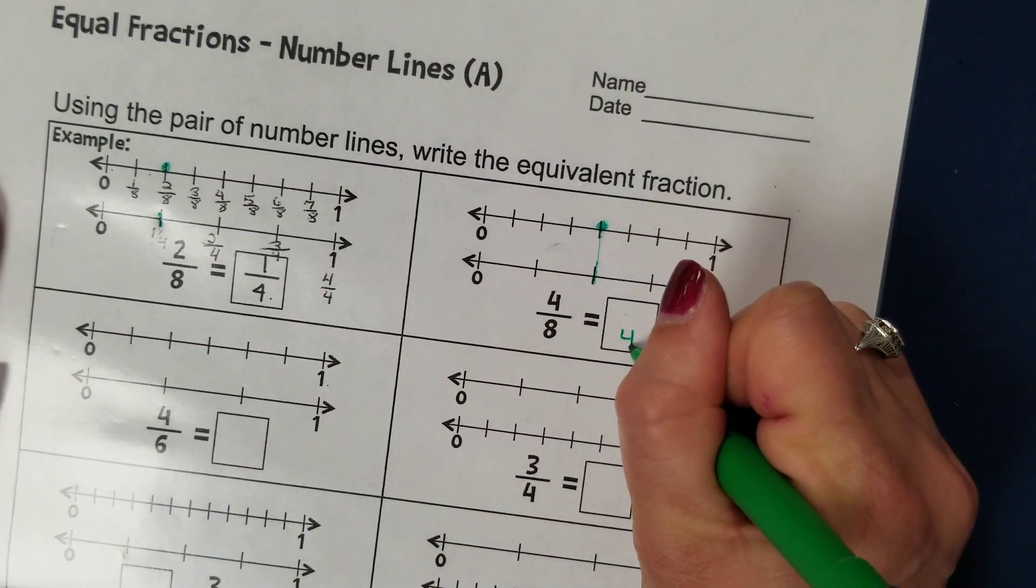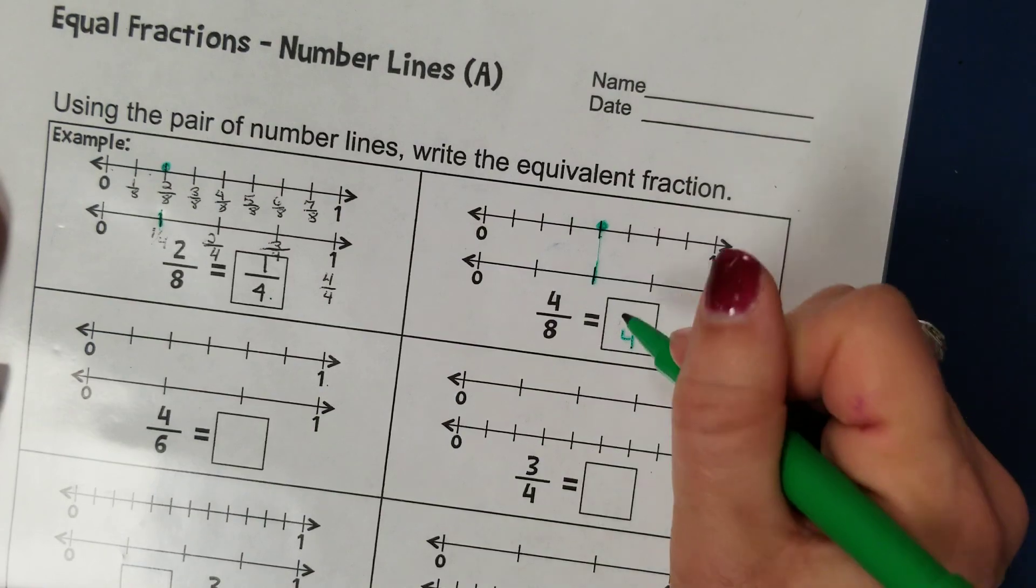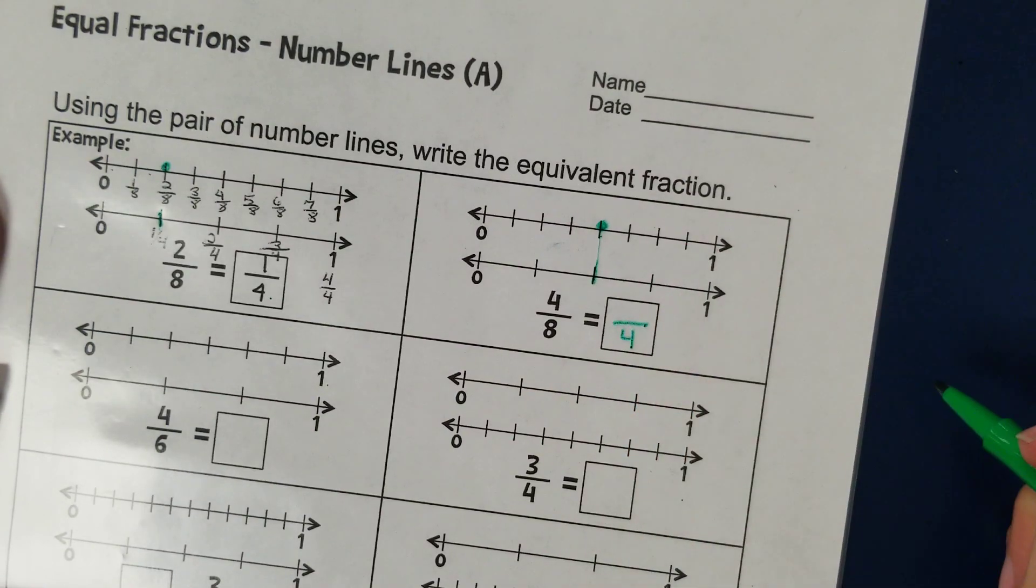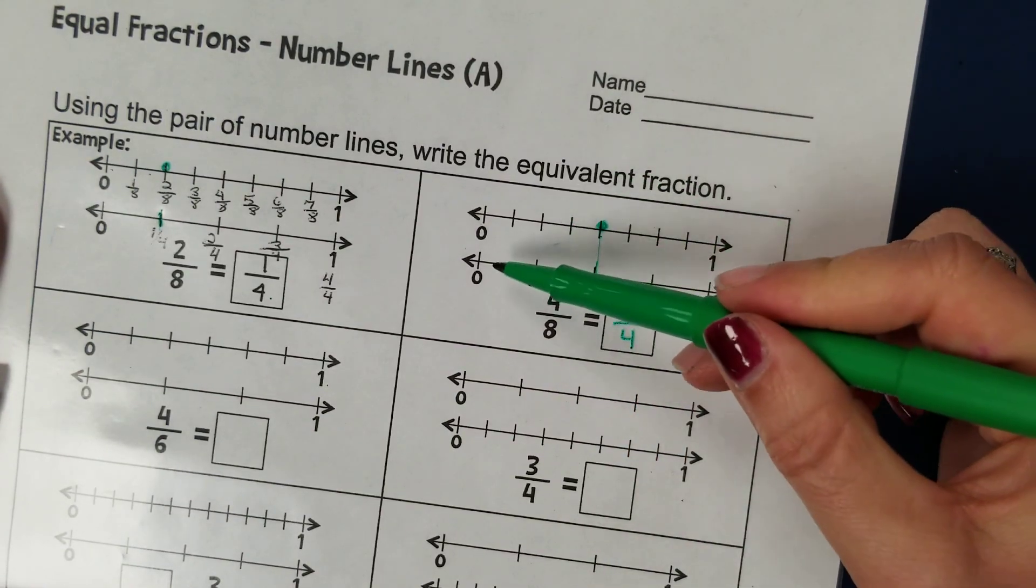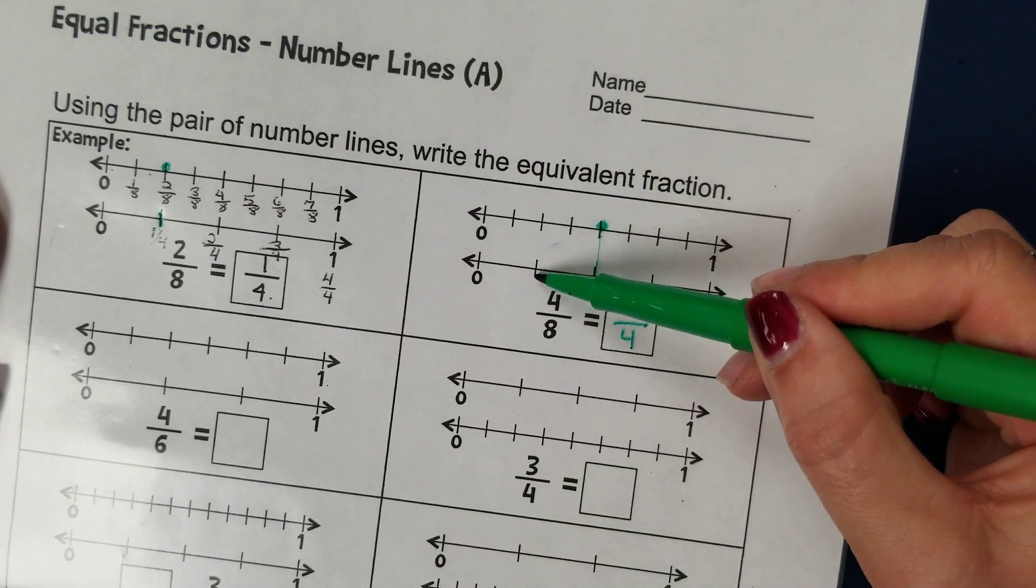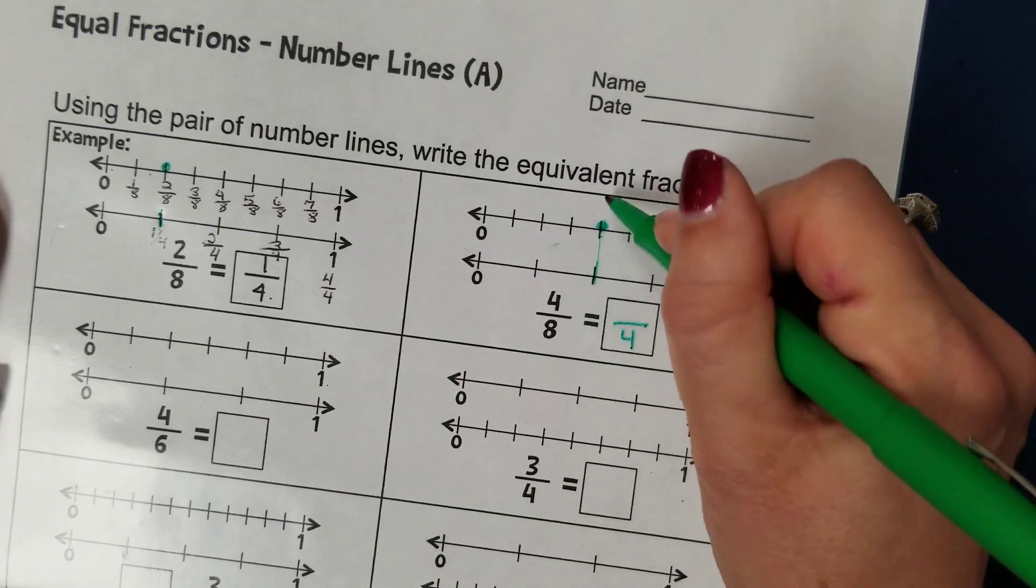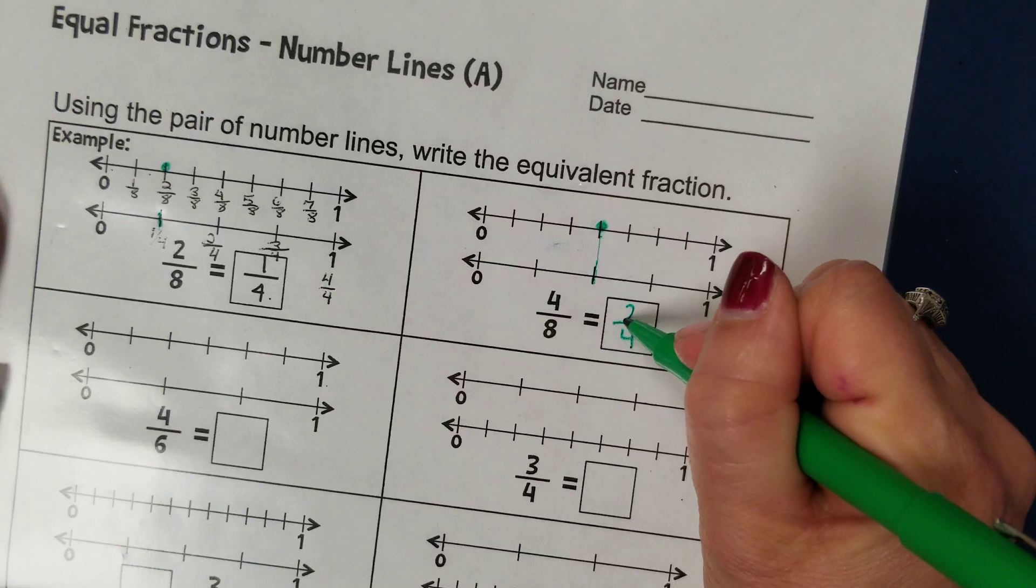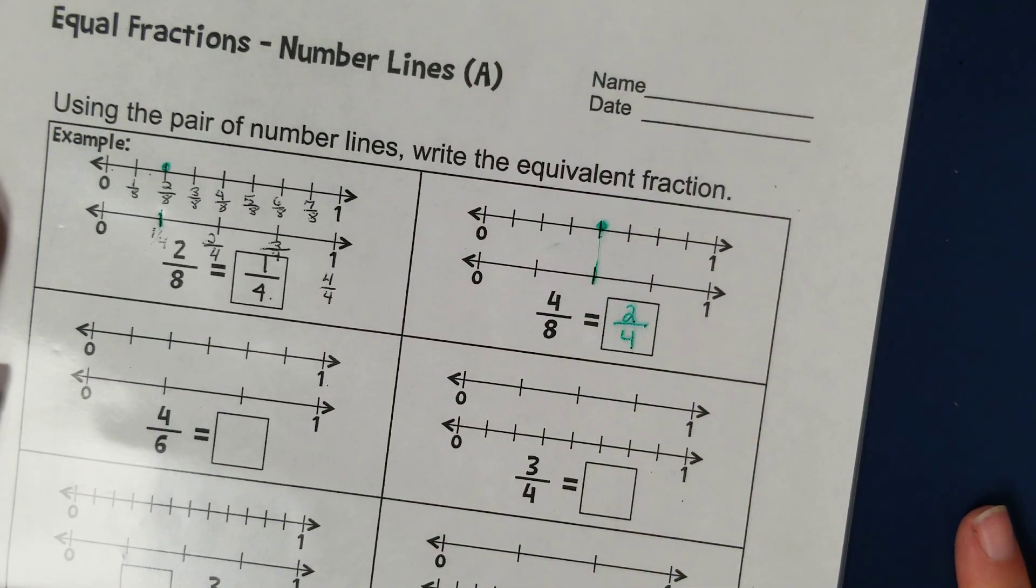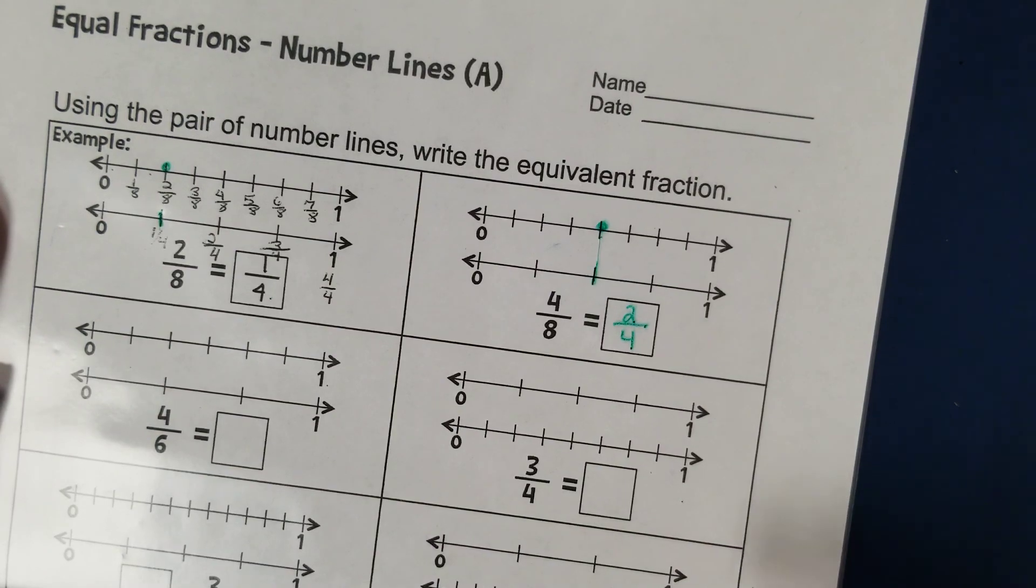So I'm going to put a four down in the denominator. To figure out the numerator of my fraction, I'm going to count over one-fourth, two-fourths. That's where it matches up. So four-eighths is equal to two-fourths. I hope that helps you guys tonight. Good luck and have fun.